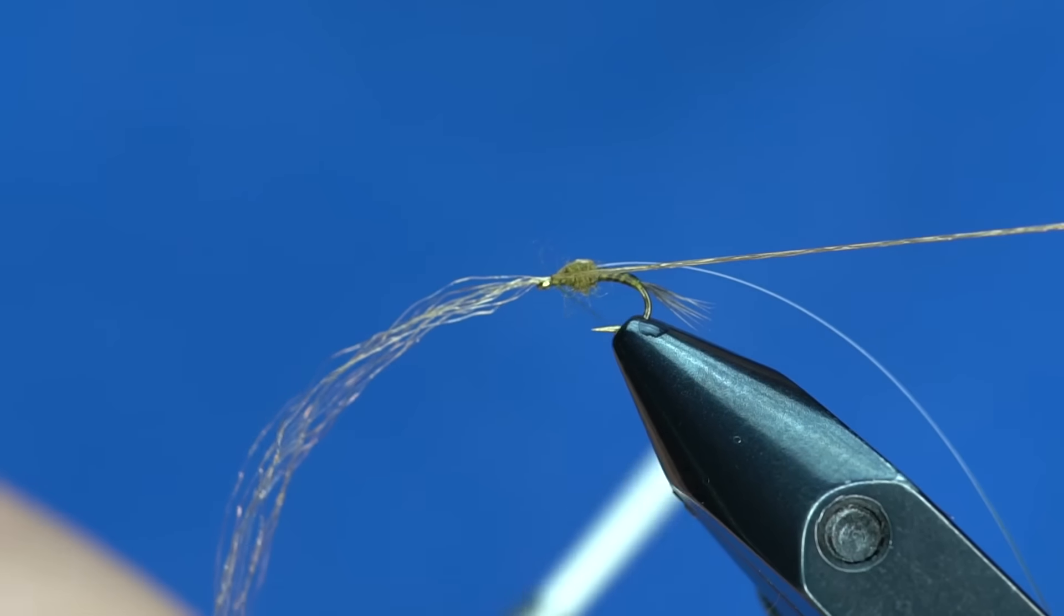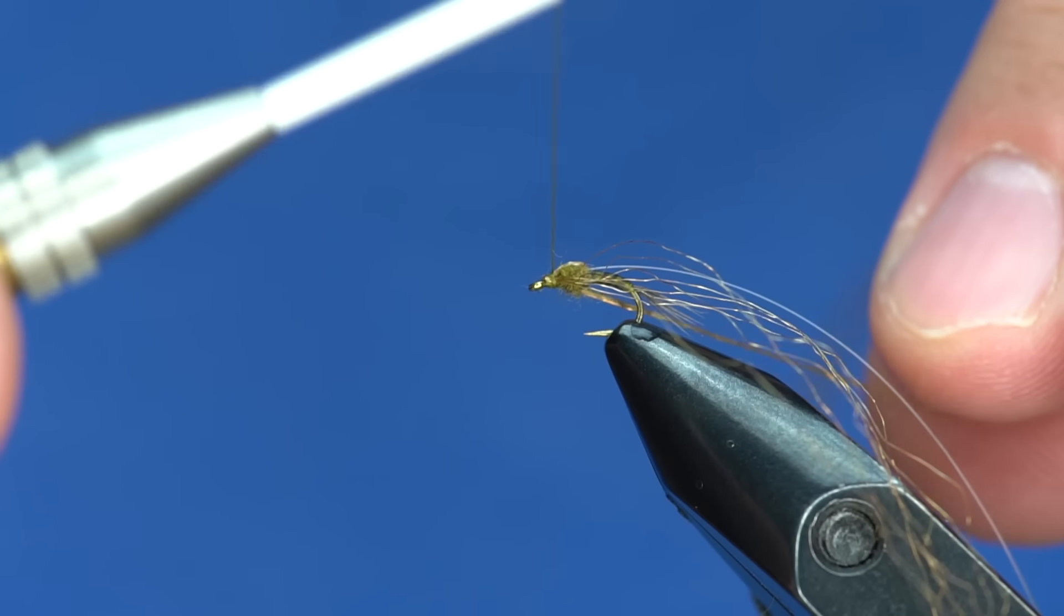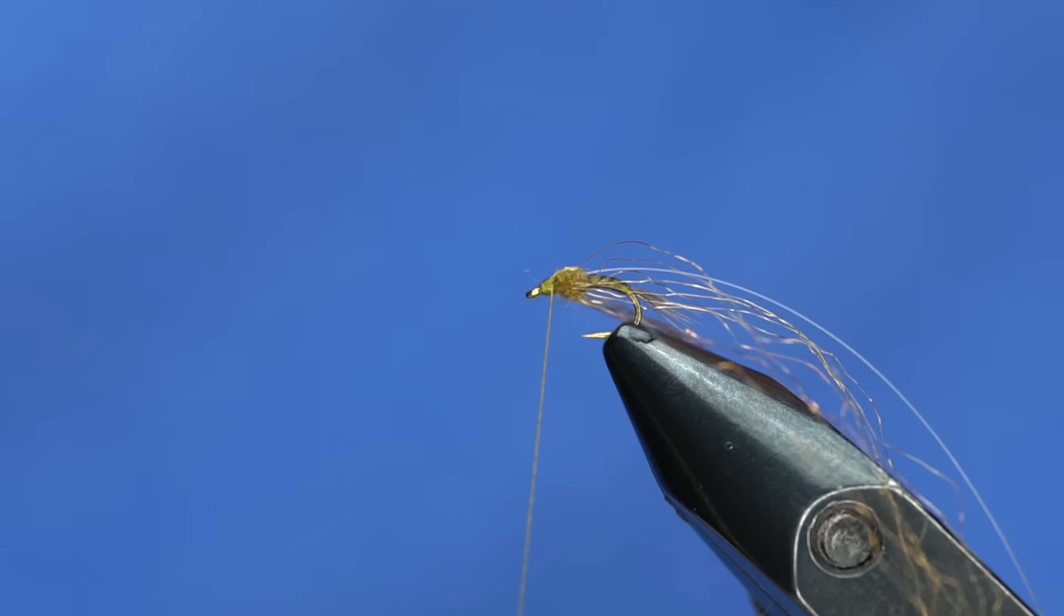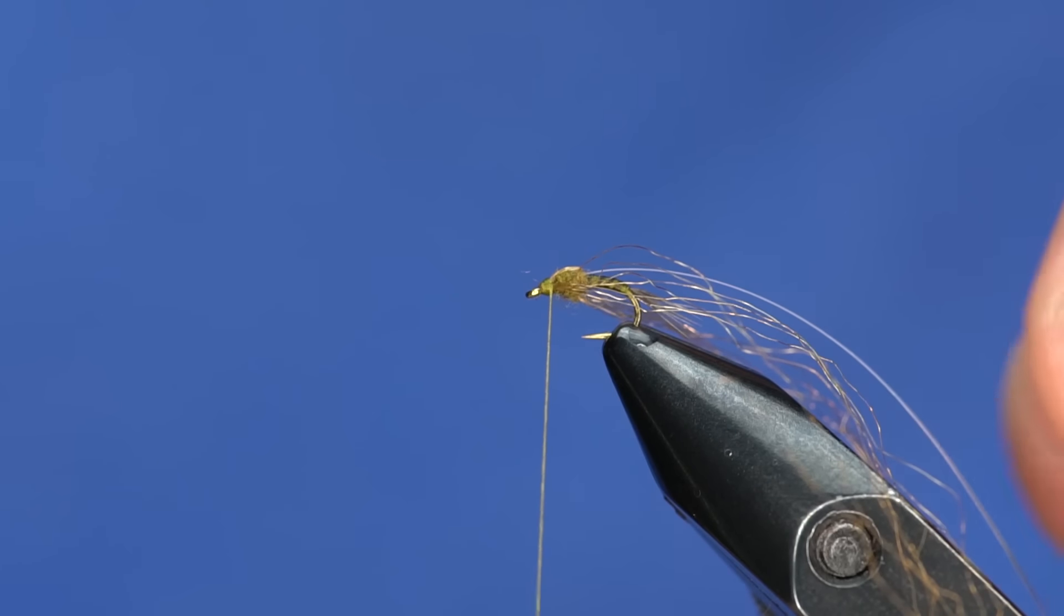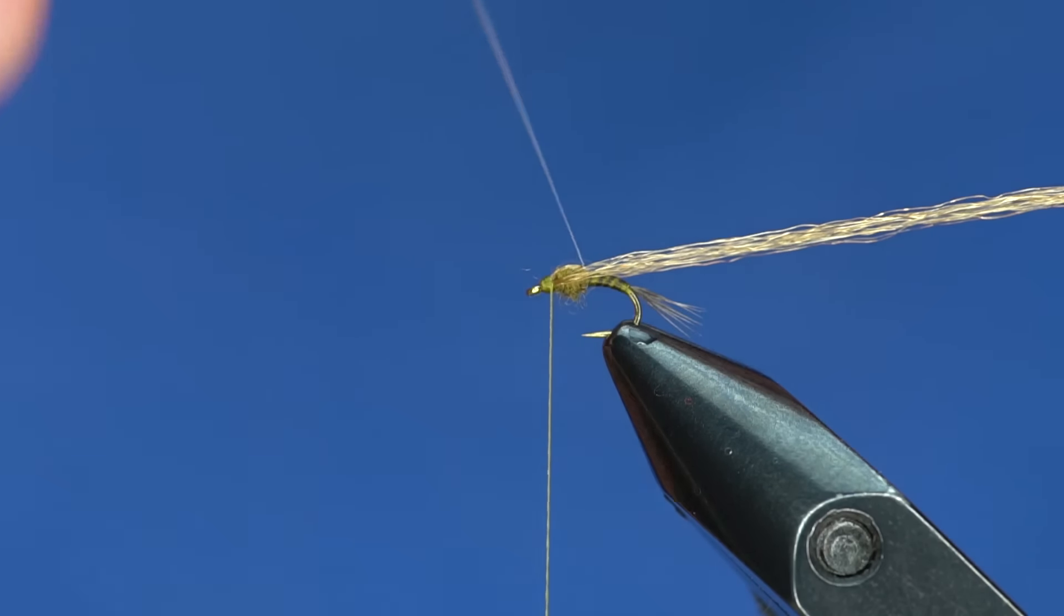Once those fibers are split, I'm going to tie some fibers in on either side of the hook shank. Then I'm going to pull the flash over. I'll usually put those fibers back in the material keeper.